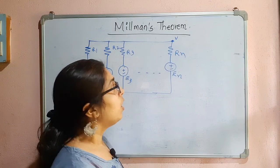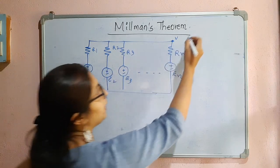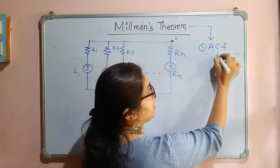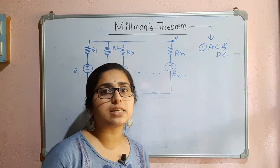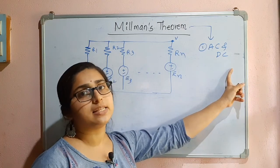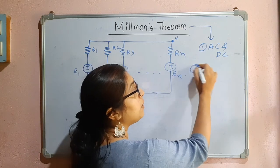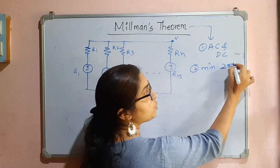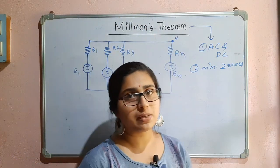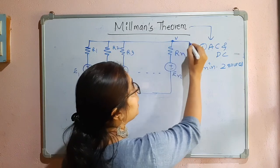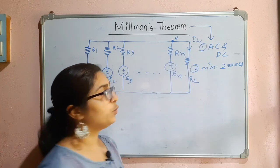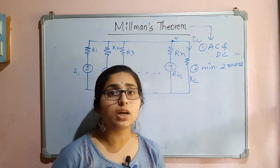One important thing to remember: Millman's theorem is applicable to both AC and DC circuits. If the circuit involves impedances like capacitors and inductors, we can still apply it. Also, a minimum of two sources must be present — with only one source you cannot apply Millman's theorem. We will consider a load resistor, and using this theorem it is easier to find the load current passing through it.